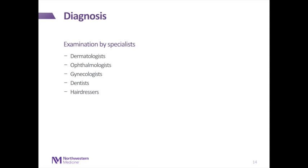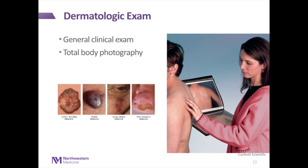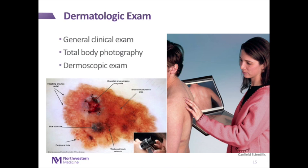Of course, you can turn to specialists who can help with the exam. These specialists include dermatologists, ophthalmologists, gynecologists, dentists, and even hairdressers, because they examine different parts of your body. But a dermatologic exam will probably be one of the most important. When you see a dermatologist, we can provide a general clinical exam, identify lesions as melanomas or benign nevi, seborrheic keratoses, or other benign lesions. We can perform total body photography, taking pictures of your body over time to track moles and see if they change. We also have a device called the dermatoscope, which allows us to see features that may be more suggestive of a melanoma.